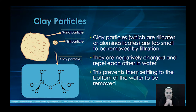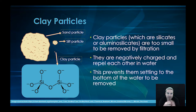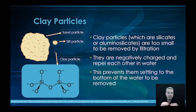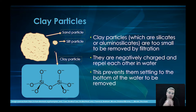Once you get right down towards the small end, these are the sorts of things you're going to find: sand particles, silt particles and clay particles. Sand particles, which are silicon dioxide, are big three-dimensional network structures — you can normally filter those out by filtration, so that's not too much of an issue. Silt particles are a similar sort of thing. Clay particles, however, are so small that normal filtration doesn't actually get rid of them.